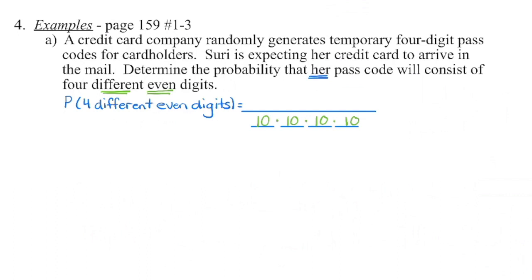Drawing out the spaces for the denominator, there is no restriction, so I have 10 possible choices for each of the four positions — digits 0 through 9 — since it doesn't say I can't repeat. In the numerator, even digits are 0, 2, 4, 6, or 8 — five potential even digits. Once I use one, I have one fewer choice for each subsequent position, since each space must be a different digit.